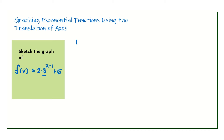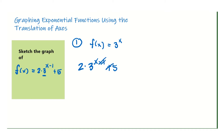So how do we graph this? The first thing you need to know is the parent graph of 2 times 3 to the x minus 1 plus 5. The parent function is where you remove all the numbers and keep just the base and the exponent. In this example, that means the parent function is 3 raised to x — removing the minus 1, the plus 5, and the times 2. The graph of this function will behave in a similar manner to its parent function.